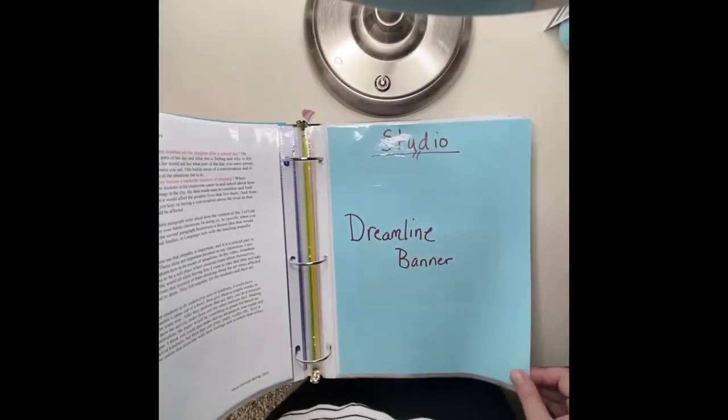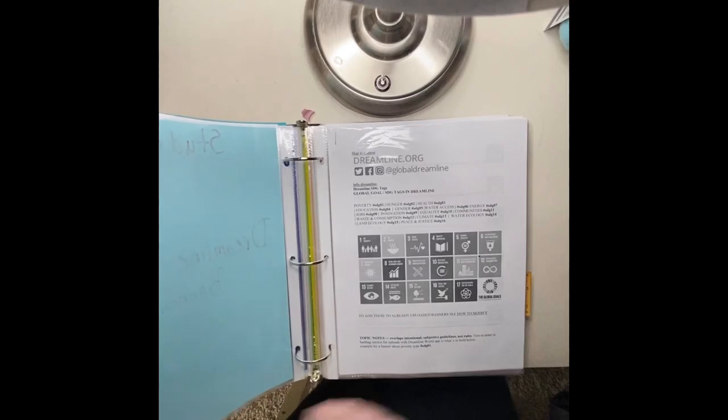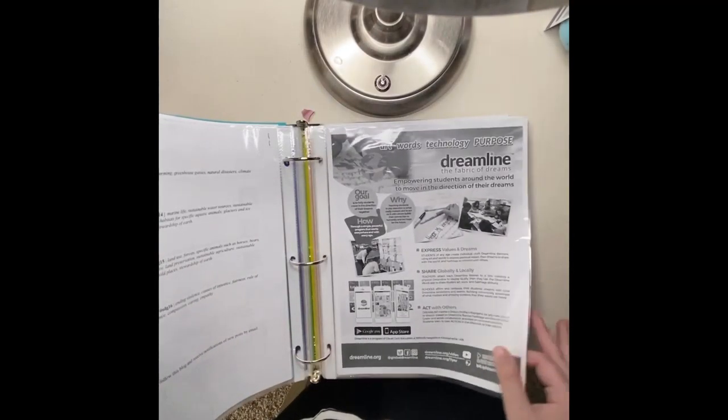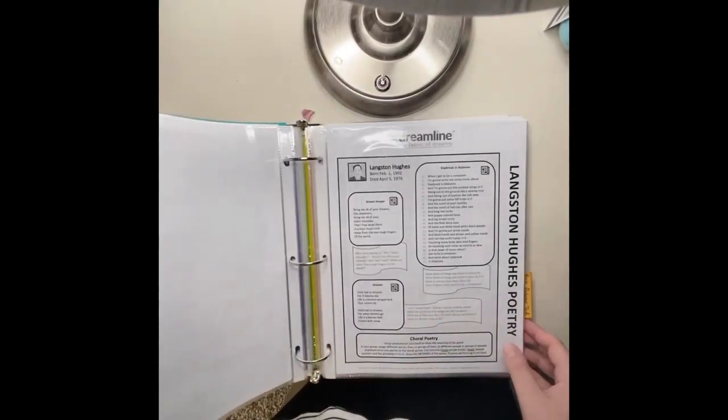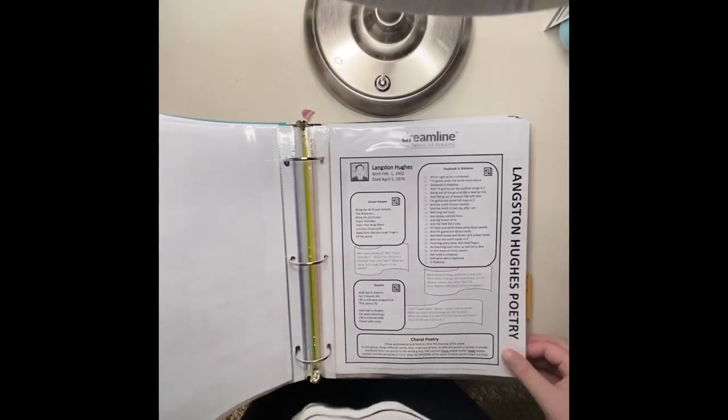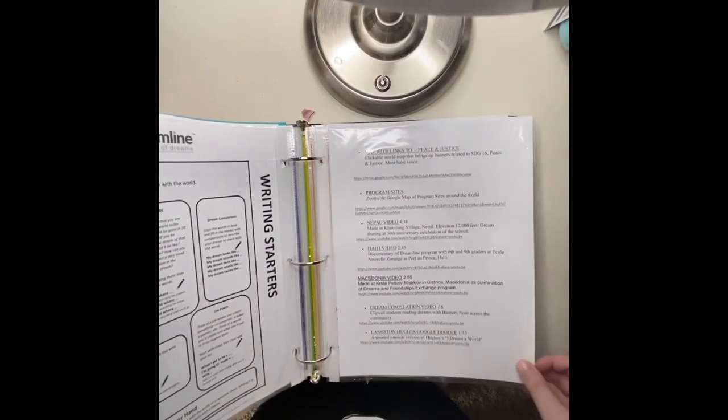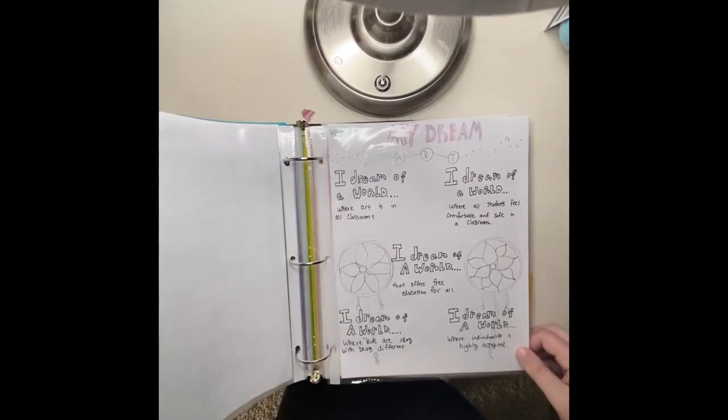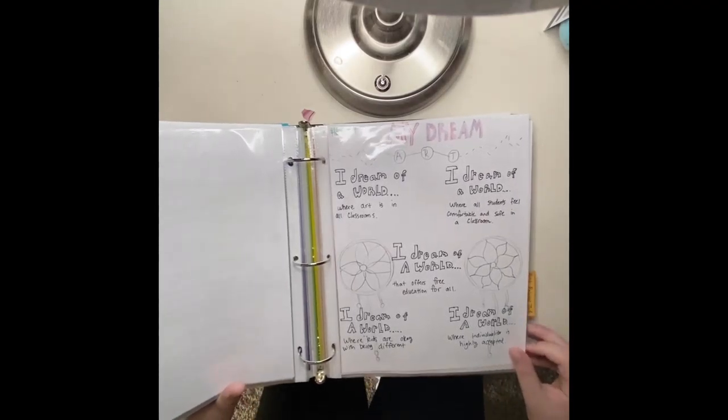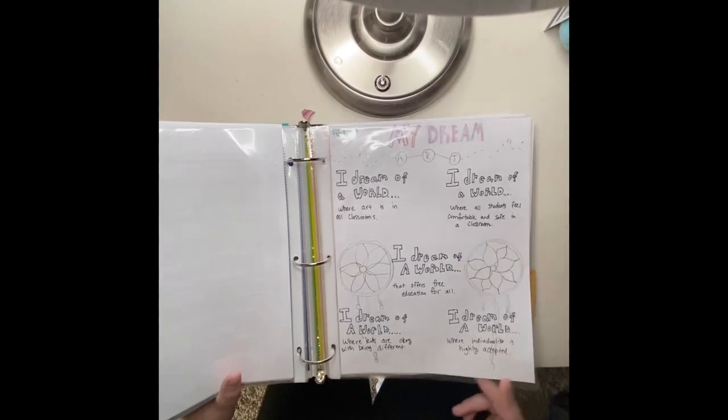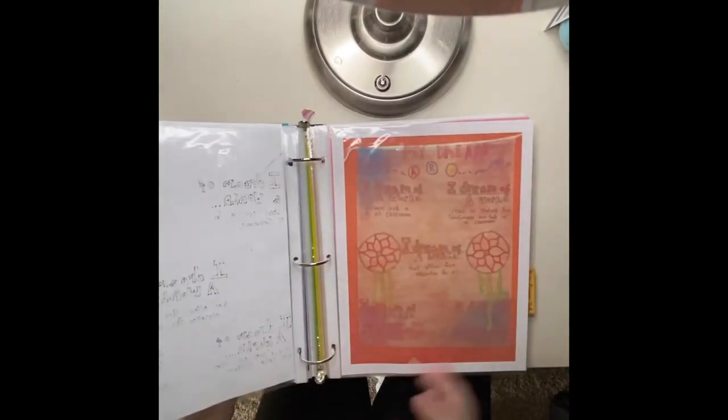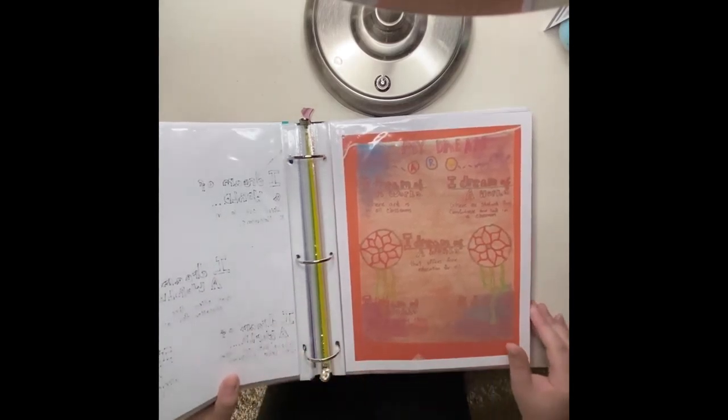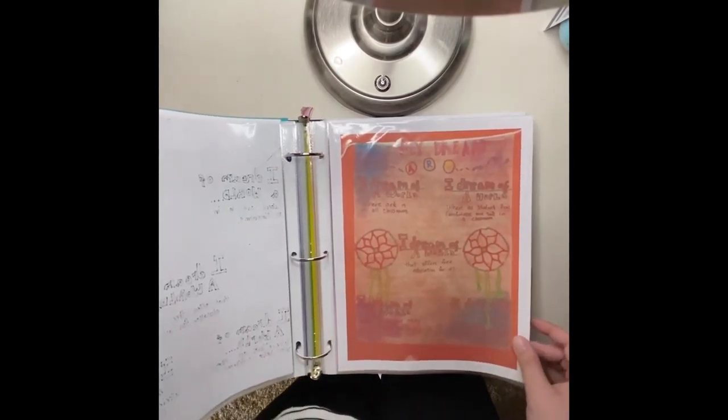Okay, so the next studio is the dreamline banner. Here's all the handouts for those. Here was my sample that I made before I went in to do my actual banner, and then here was my banner itself. My printer was not working that well, but here's my banner.